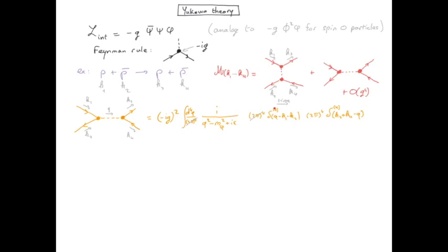The first delta function kills the integral and changes q into k1 plus k2. We then recognize that the second delta function is just a global energy momentum conservation which we don't need to write explicitly.